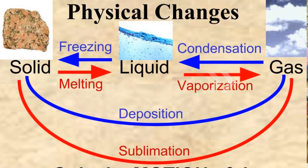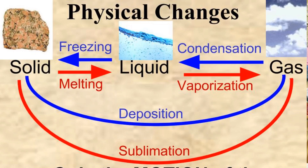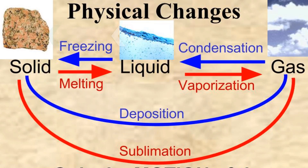Those gas molecules are moving really, really fast. If those gas molecules were to lose energy, they might slow down and go through what's called condensation, where those molecules slow down, start bumping into each other, start combining, grouping together. When they group together they form droplets and turn from a gas back to a liquid. If we take more energy away from that liquid and slow those molecules down, they can eventually become a solid.